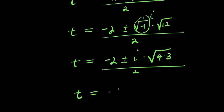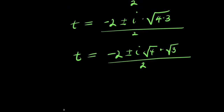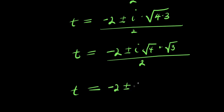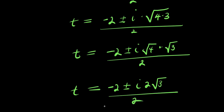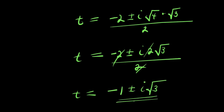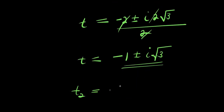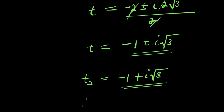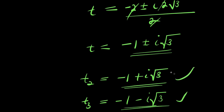From the quadratic formula, I have t equals negative 2 plus or minus i times square root of 4 times square root of 3, divided by 2. This gives t equals negative 2 plus or minus 2i root 3, divided by 2, which simplifies to t equals negative 1 plus or minus i root 3. So t₂ equals negative 1 plus i root 3, and t₃ equals negative 1 minus i root 3 — these are the two complex values for t.